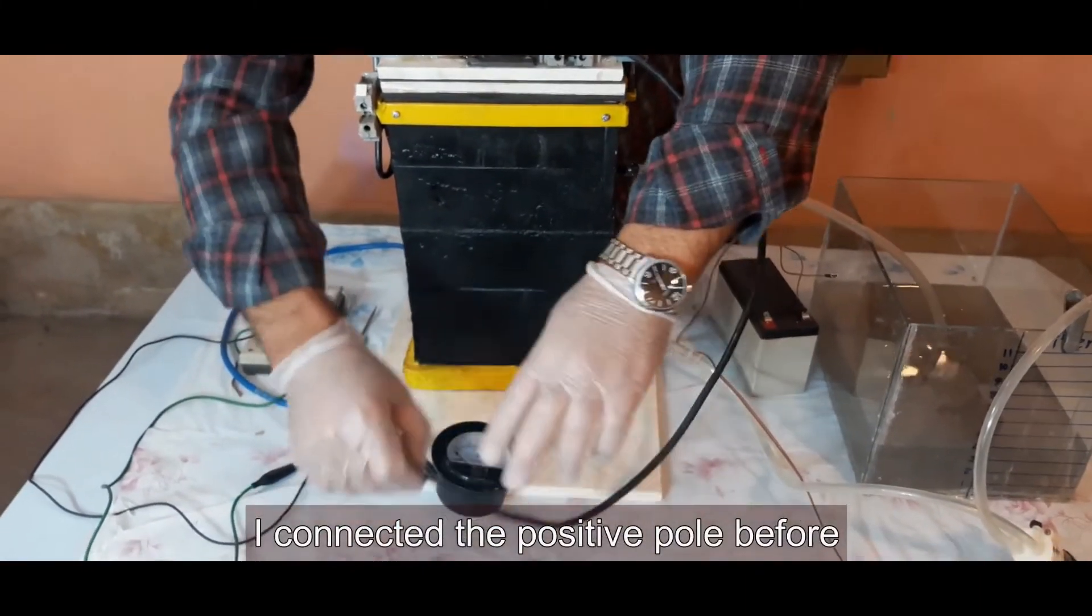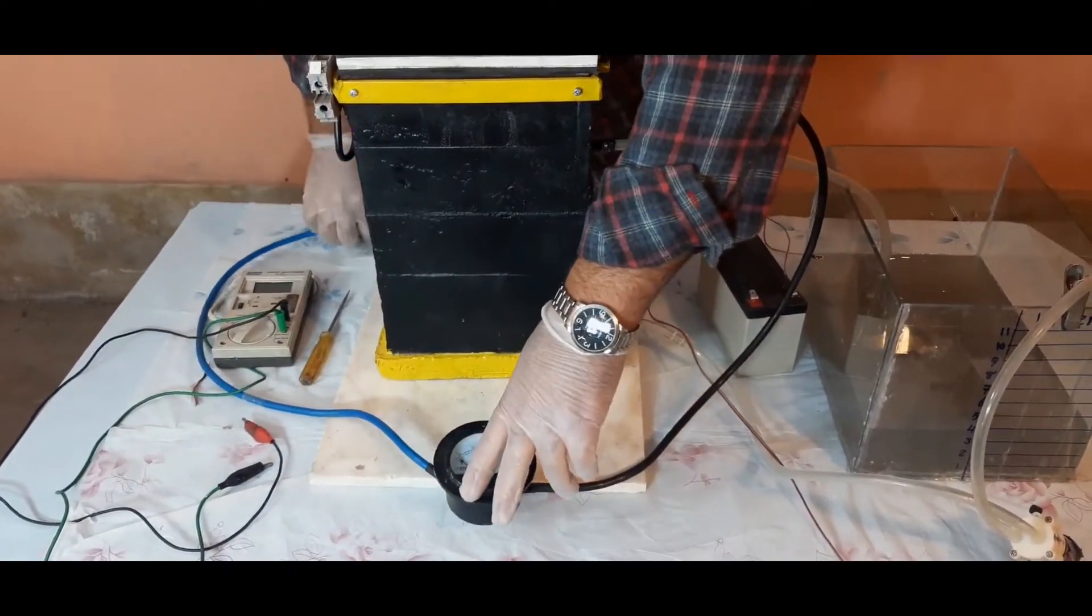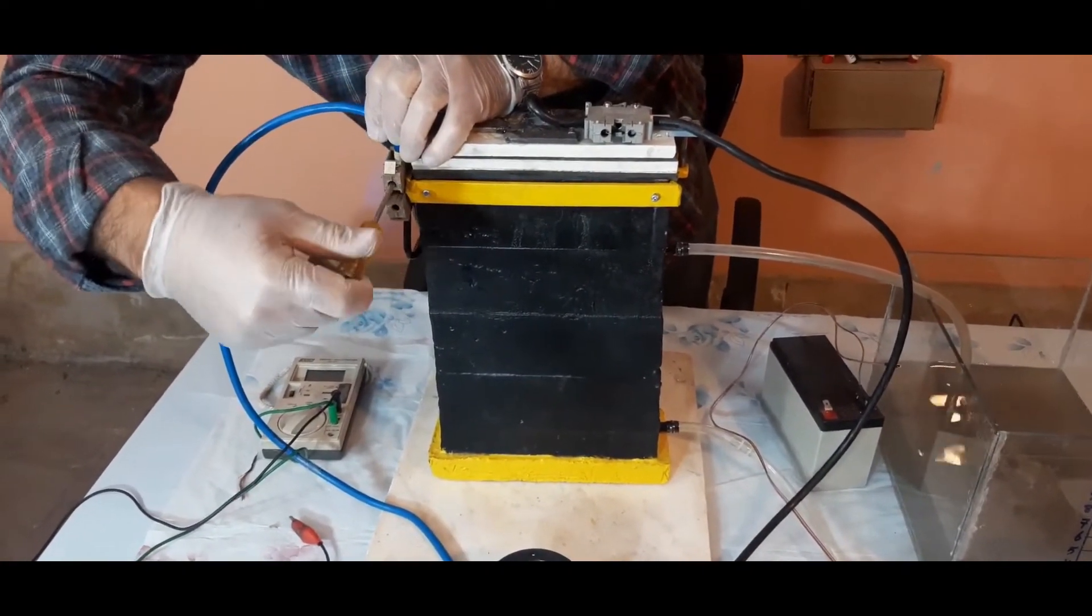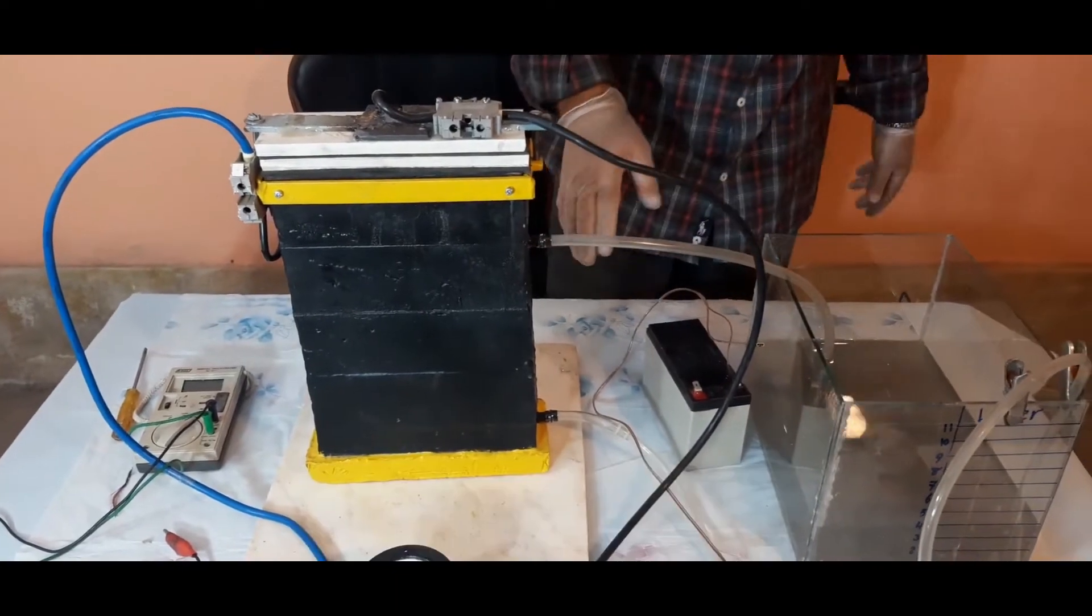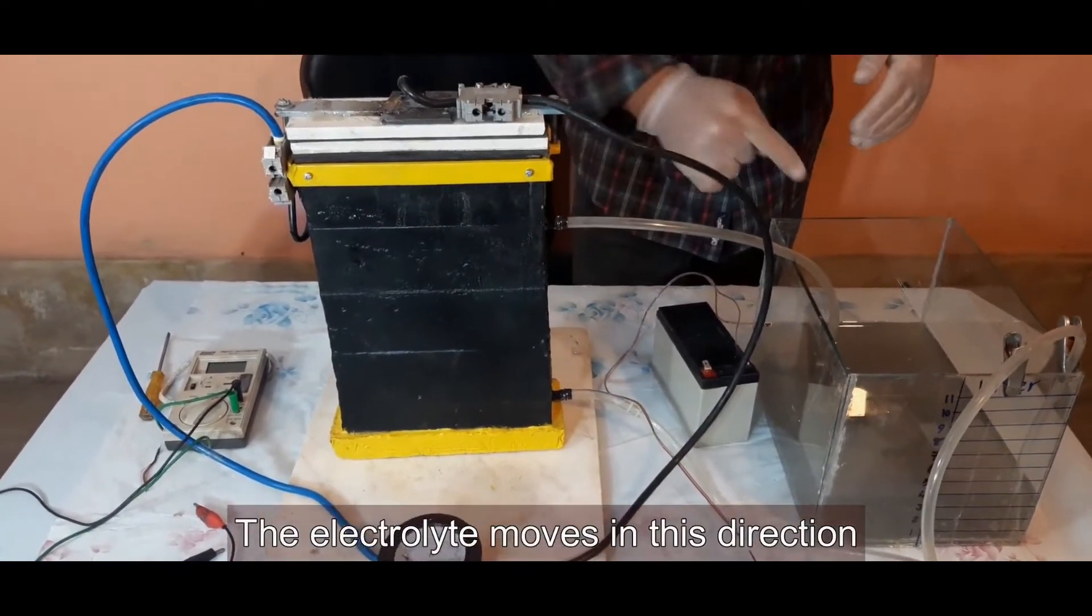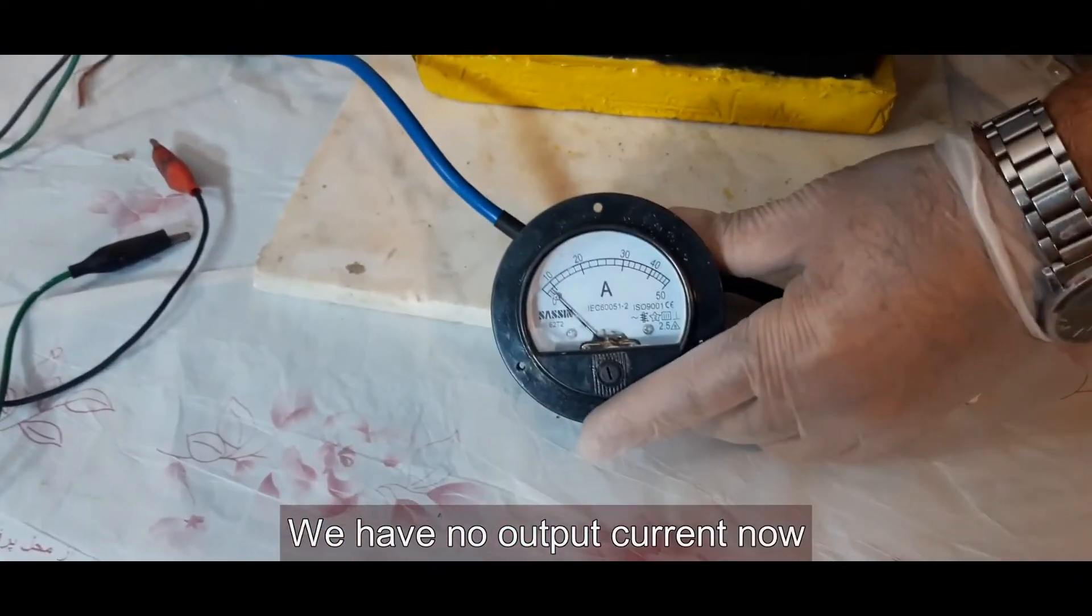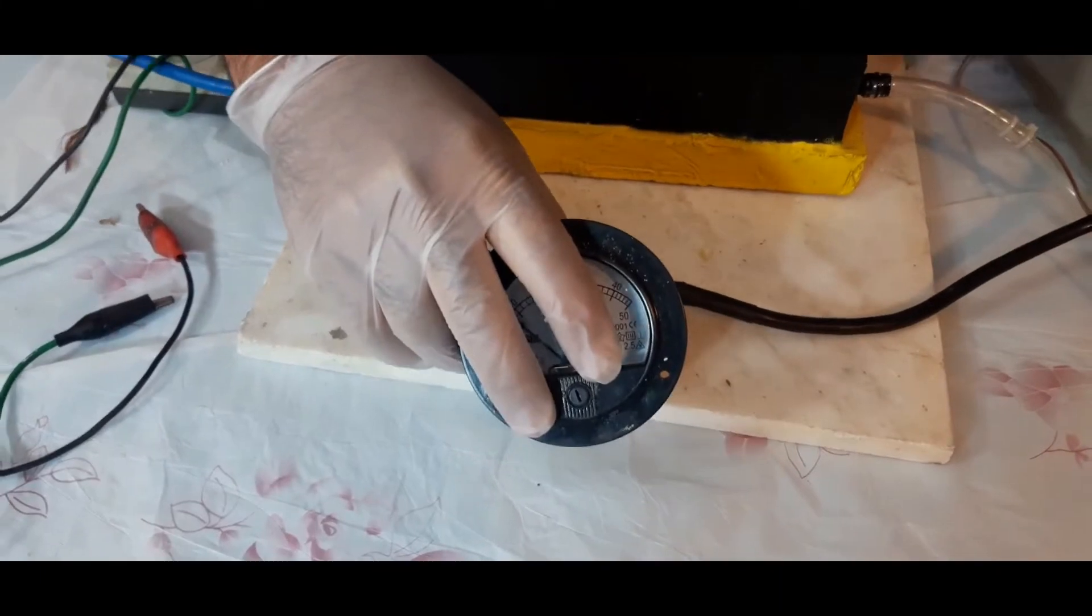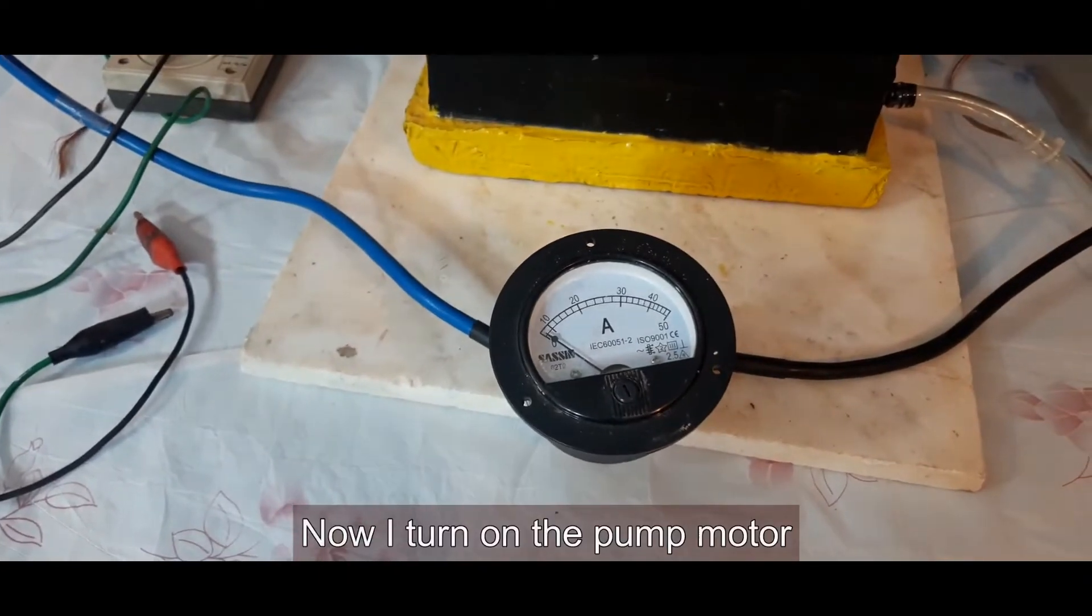I connected the positive pole before. I also connect the negative pole. We have short-circuited the battery output by an ammeter. Now, everything is ready. When the pump is turned on, the electrolyte moves in this direction. We have no output current now. Now, I turn on the pump motor.